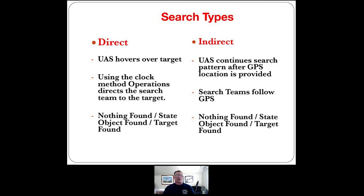Search types — we discussed these briefly. Direct search: you hover over the target and talk them in using the clock method. You don't always have to rely on talking them in too much except for geography they need to navigate around, or basically they can just walk toward where the UAS is hovering. They respond with 'nothing found' or 'target found.' Indirect search: the UAS continues its search pattern after providing a GPS location for teams to go after — we're not staying on top of them while they go. We keep trying to find new targets. Same terminology applies: if something's found or not found.